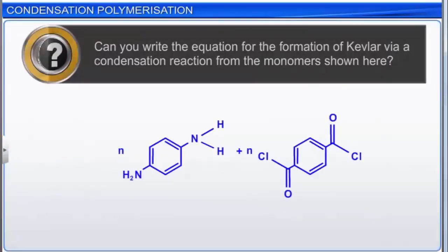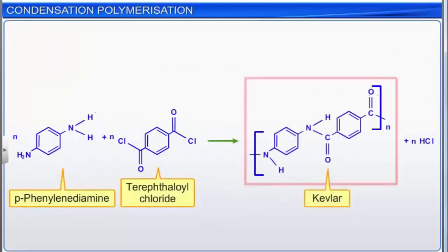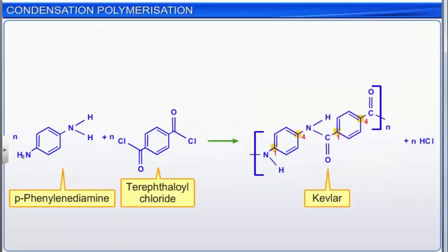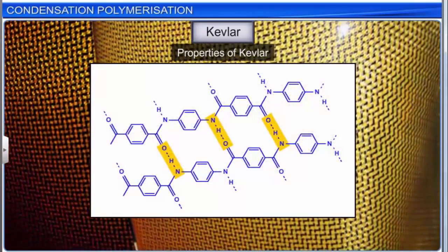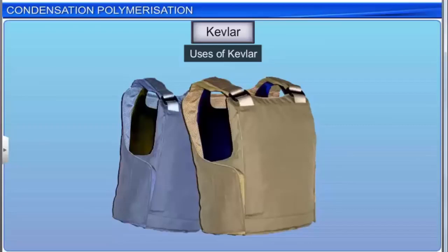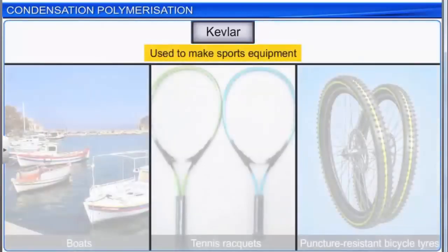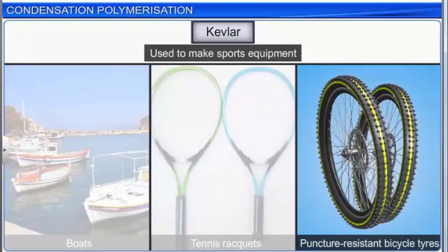Kevlar is formed via a condensation reaction from two monomers that form a polyamide chain with para or 1,4 linkages, with HCl formed during the condensation reaction. Kevlar fibers are very strong, as many hydrogen bonds are present between the chains. Kevlar is used to make protective gear including bulletproof vests. It is also used to make a variety of sports equipment including boats and tennis rackets, besides puncture-resistant bicycle tires.